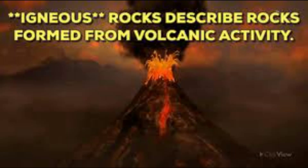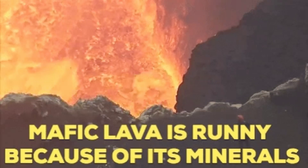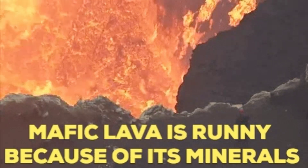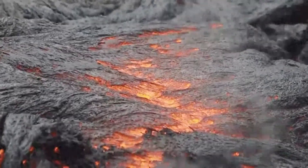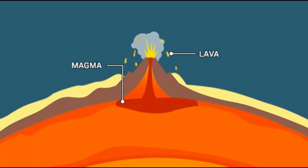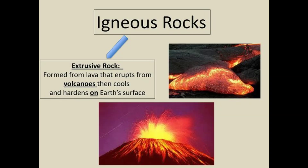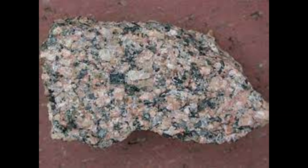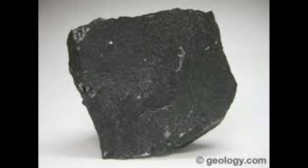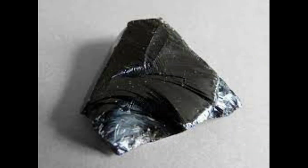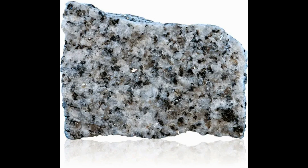Igneous rocks are formed by the solidification of molten rock material. The hot mineral mass called magma comes out to the surface through volcanoes and cools down to form rocks. These rocks may be coarse or fine. Igneous rocks are of four types: pumice, basalt, obsidian, and granite.